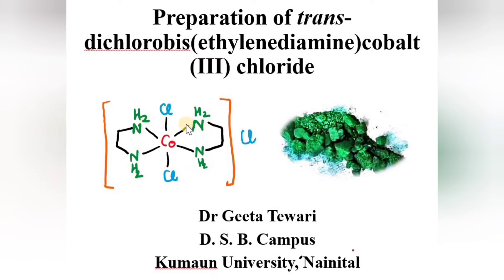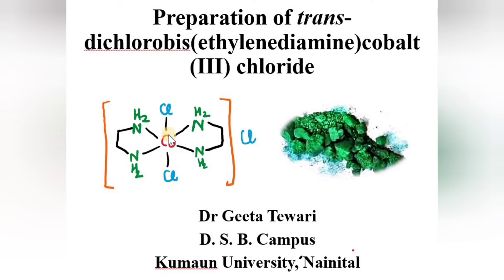This complex is a coordination compound where cobalt is in the +3 oxidation state. There are two ethylenediamine ligands — these are bidentate ligands present at trans positions to each other. There are also two chloride ligands present at trans positions to each other with this cobalt(III) ion. We will obtain green crystals of this compound when we synthesize it in the laboratory using cobaltous chloride and ethylenediamine.